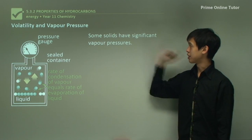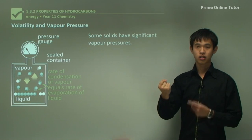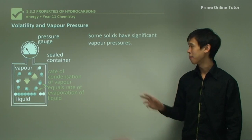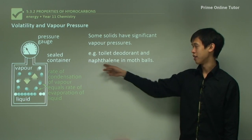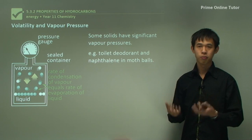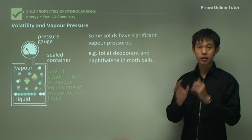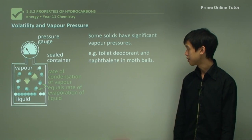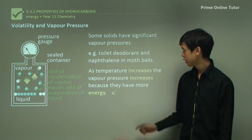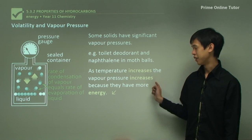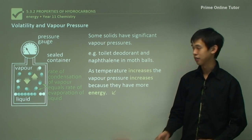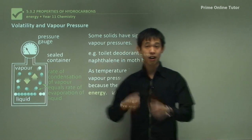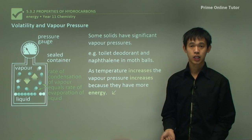Even some solids have significant vapor pressure — they can change to gas in a sublimation-like process. For example, toilet deodorant and naphthalene in moth balls: you can smell them and they emit lots of gas even though they're solid. As temperature increases, vapor pressure increases because you have more energy in the molecules, and more of them will tend to go into the gas phase because they now have the energy to do so.